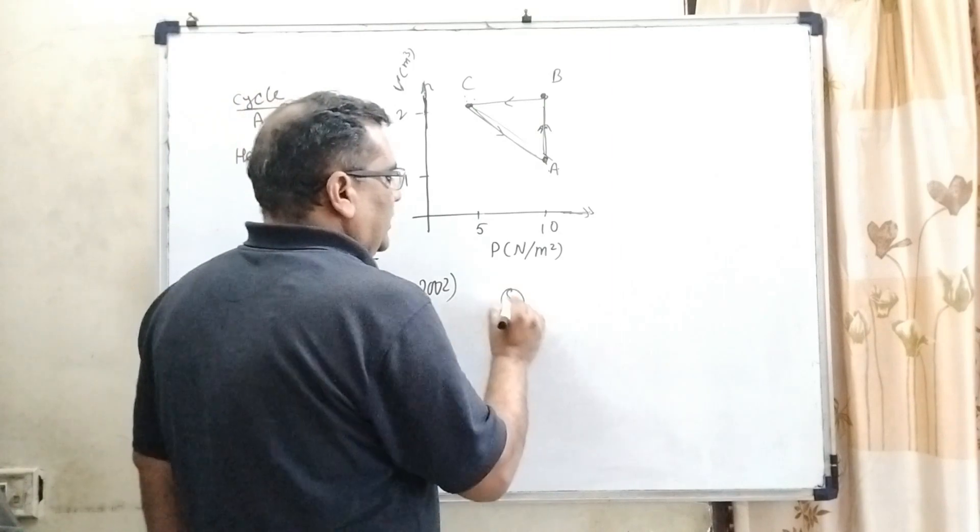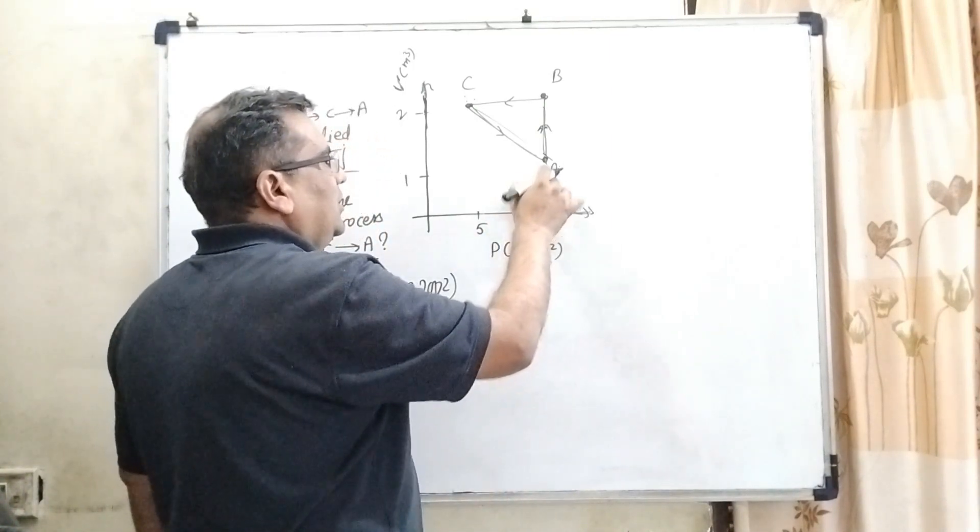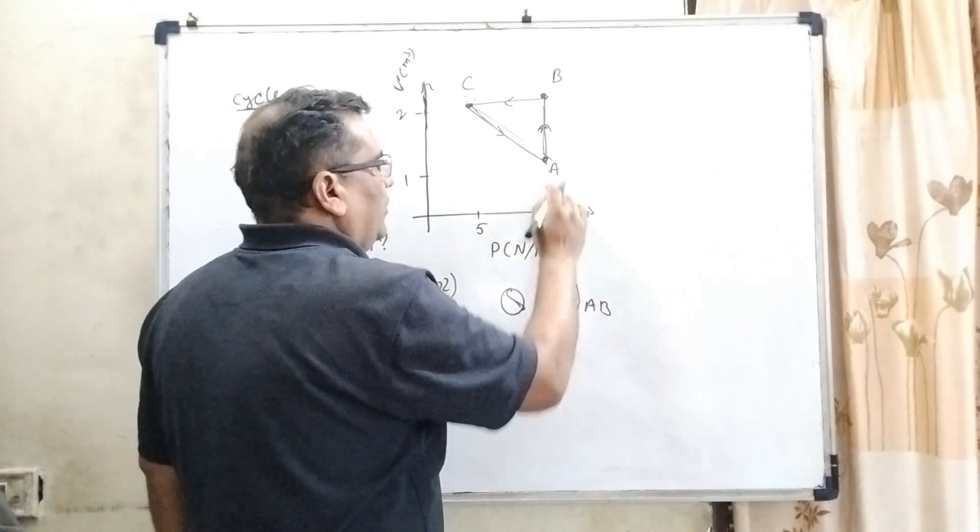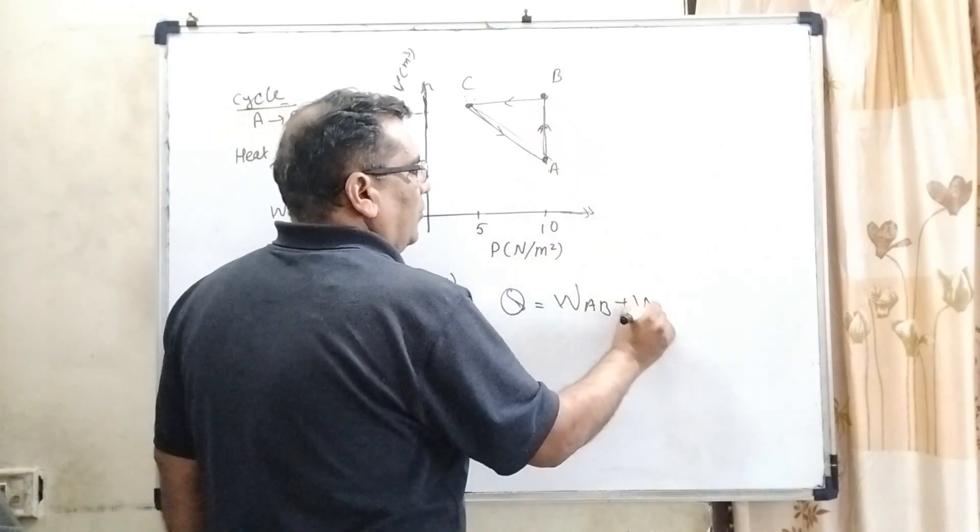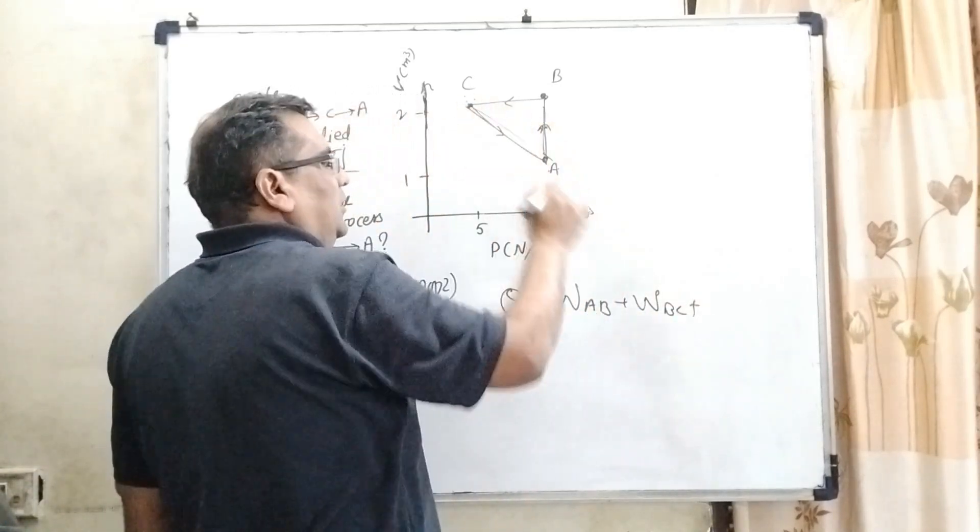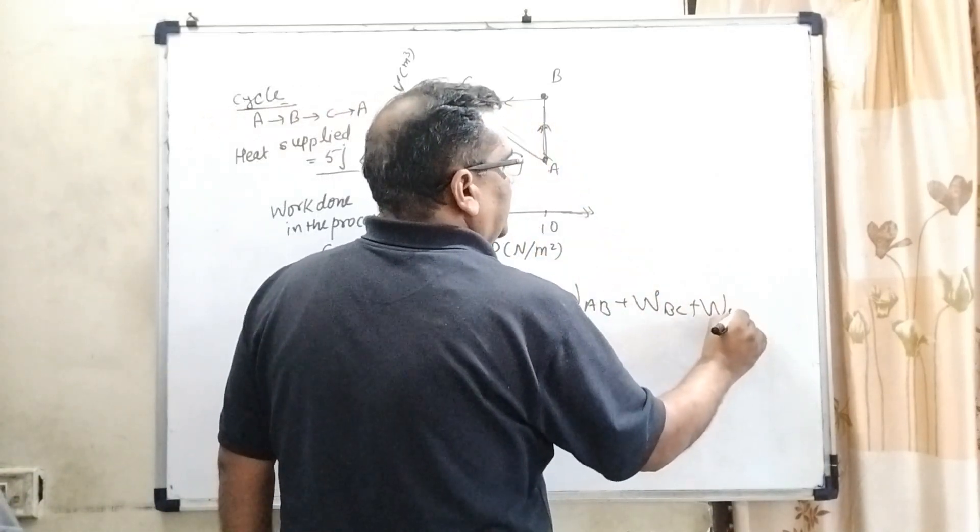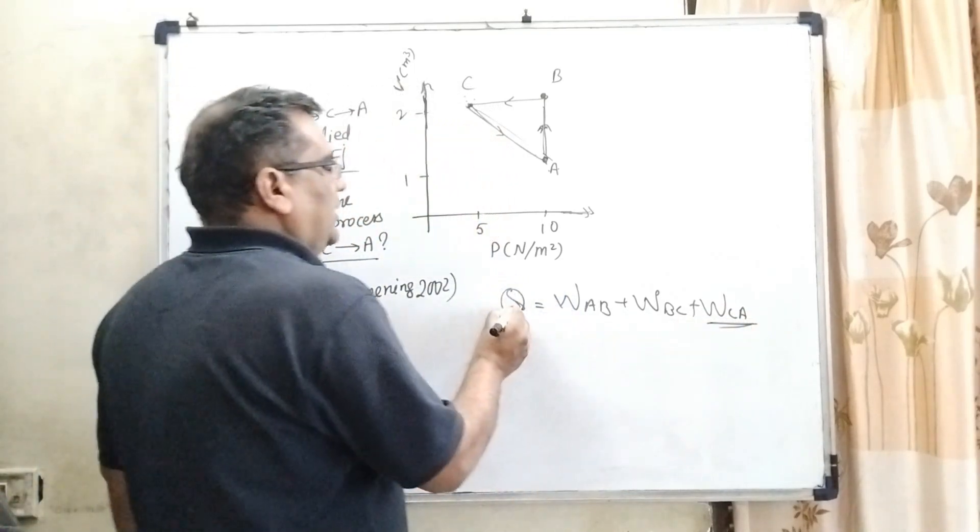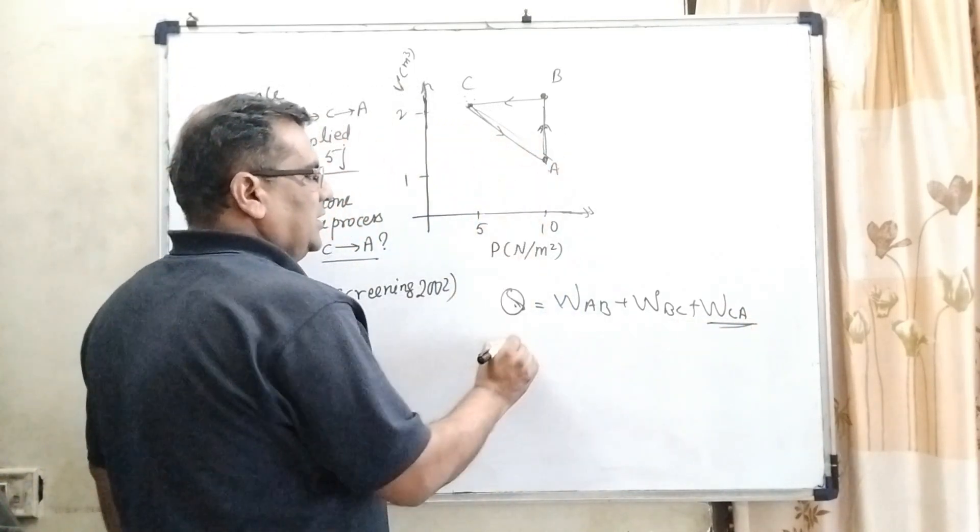So here, total energy is utilized in work done W_AB, work done W_BC, and work done W_CA. So this work done C to A, we have to calculate. Total energy of the system is given, that is 5 joules.